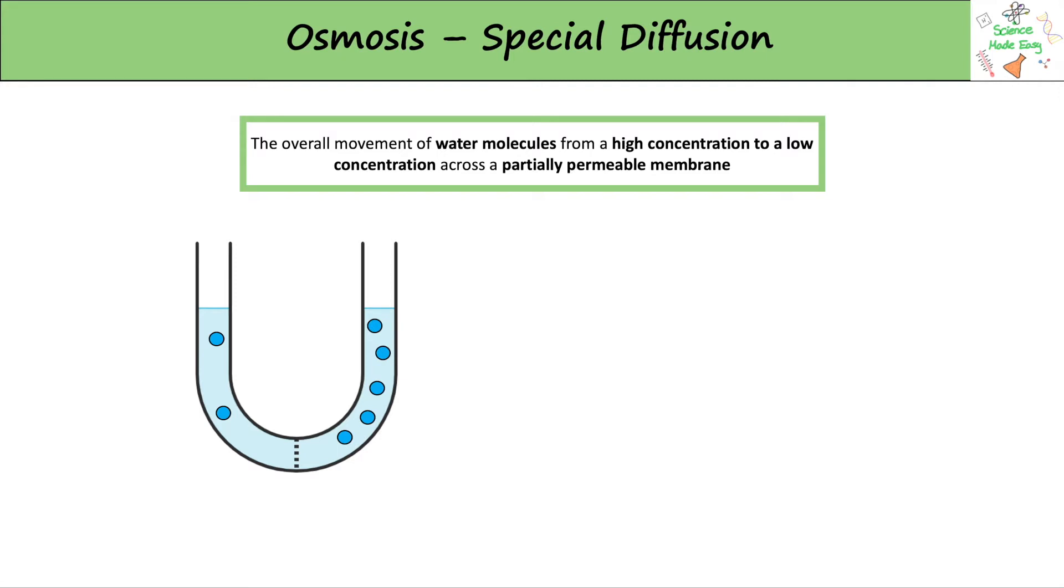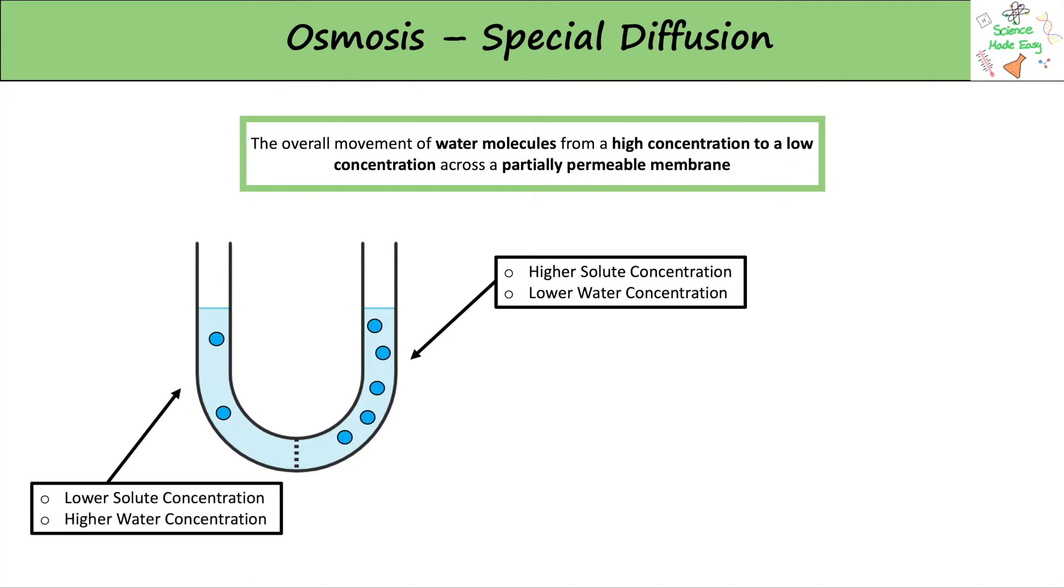This diagram shows an osmosis tube with one side with a higher solute concentration represented by the blue circles and a lower water concentration, and the other side with a lower solute concentration and a higher water concentration.